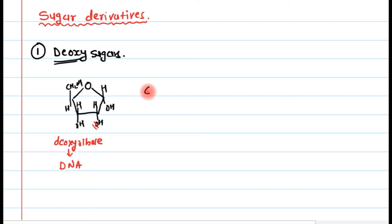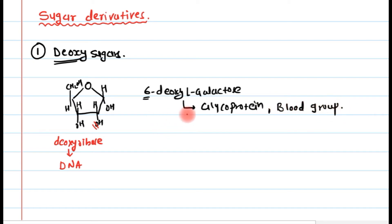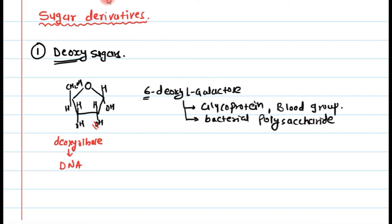The second important deoxy sugar is 6-deoxy-L-galactose. The number 6 indicates that oxygen is removed from the OH group on carbon 6. This 6-deoxy-L-galactose is found in glycoproteins, including the important blood group substance, and is also found in bacterial polysaccharides.